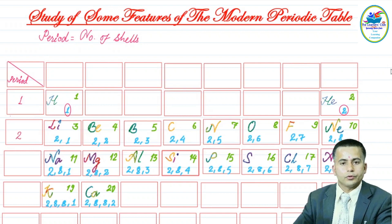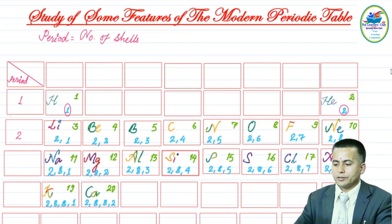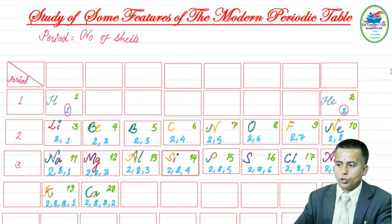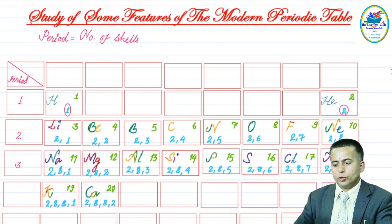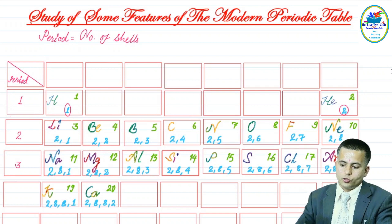From sodium to argon — atomic numbers 11 to 18 — there are three shells in all these atoms, so their period number is three. For potassium and calcium, we can see K, L, M, and N shells, as shown by the electronic configuration in light blue at the bottom of each box. That is why they have period number four.